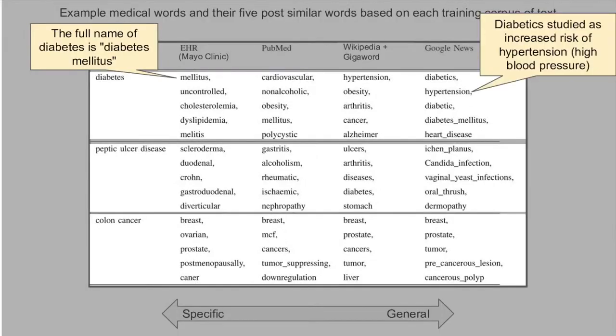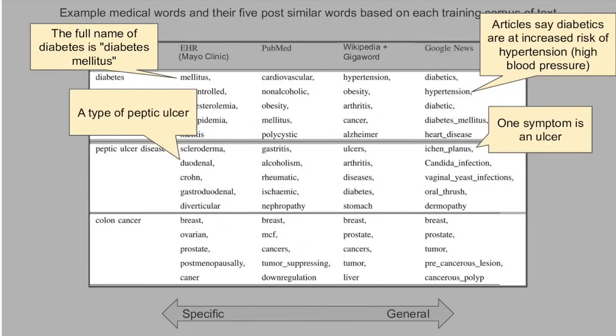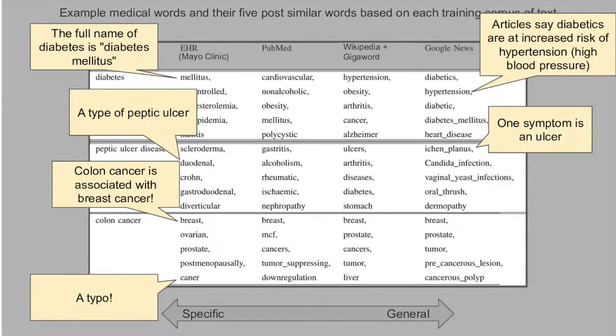We can see for diabetes that the EHR data set had the full name written often, while the Google News data set likely had articles about related studies. For peptic ulcer disease, we can see the EHR data set specifies types of ulcers, while the Google News data set specifies symptoms. And finally, we can see for colon cancer that there is a relationship for all data sets relating this to breast cancer. And we can see a typo in the EHR data for the word cancer.